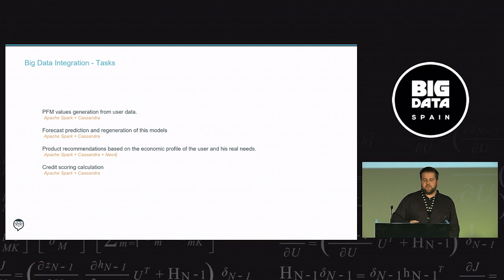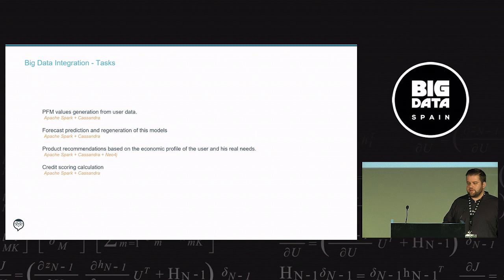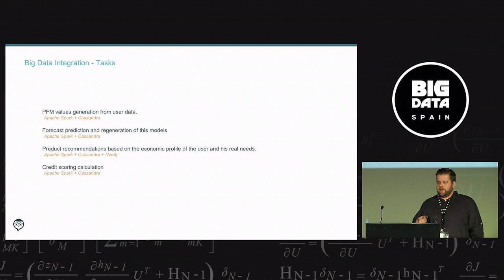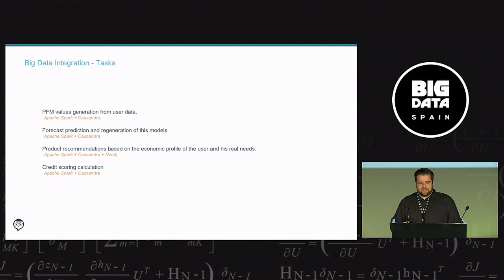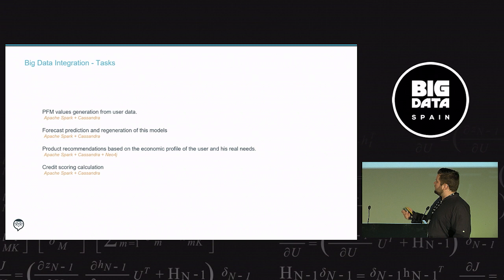So big data integration, let's go to talk about big data integration. The big data team uses the informational database to get all our data. In this case, it's Cassandra. But depending on the use case needs, other tools. For example, Neo4j. We use Neo4j database to create and store graphs. Use it in the recommendation engine. We have these following tasks. We generate PPM values, generation from user data, forecast prediction, and generation of these models. A product recommendation based on the economic profile of the user and his needs. And finally, a credit scoring calculation.